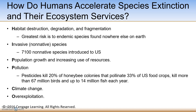How do humans accelerate species extinction rates and impact ecosystem services? The acronym HIPCO — H-I-P-P-C-O — covers the main causes. Habitat destruction, degradation, and fragmentation is the single greatest threat to species. The greatest elimination of species due to habitat loss comes from deforestation in tropical areas, destruction of coral reefs and wetlands, and planting monoculture crops on diverse grasslands. Out of all factors listed, habitat loss has the greatest impact on species populations.